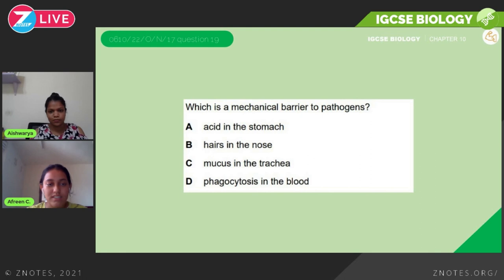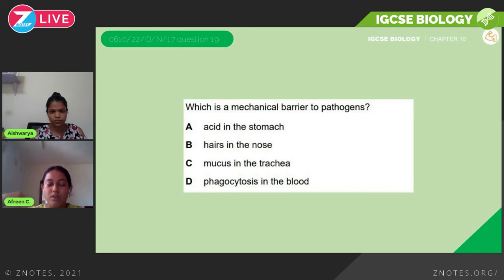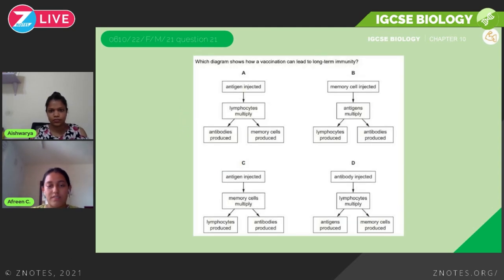Now for some practice questions. October/November 2017: which of the following is a mechanical barrier to pathogens? A — acid in the stomach (no, that's chemical). B — hair in the nose (yes). C — mucus in the trachea (no, that's chemical). D — phagocytosis in the blood (no, that's a cell process). The correct answer is B.